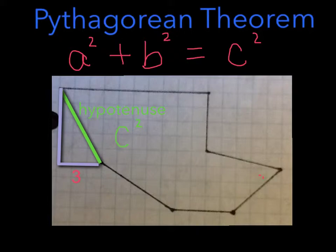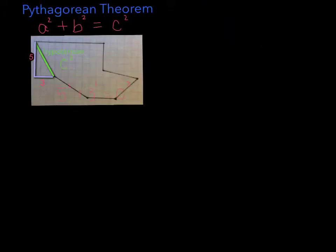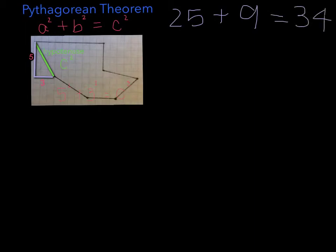The side with 5 is a squared, so it would be 5 squared, plus the side with 3, which is b squared, so it would be 3 squared. So 5 squared plus 3 squared equals c squared. 5 squared is 5 times 5, which equals 25, plus 3 squared, which is 3 times 3, equals 9. So 25 plus 9 equals 34, and we have found that c squared equals 34.